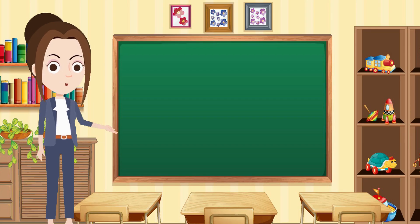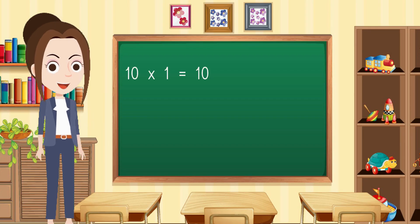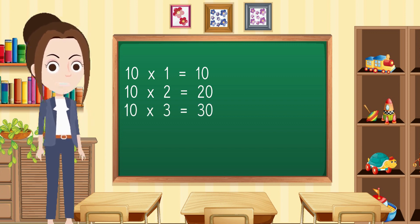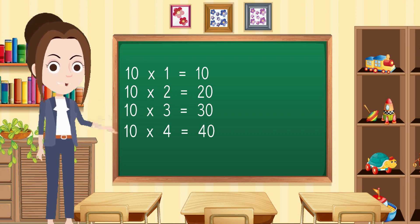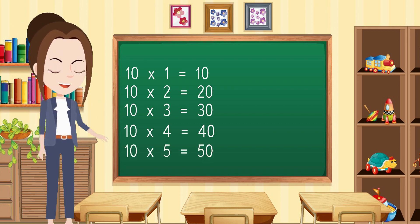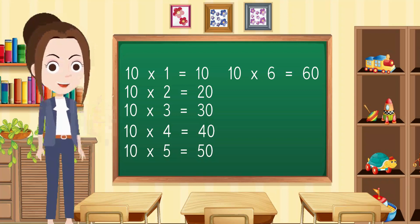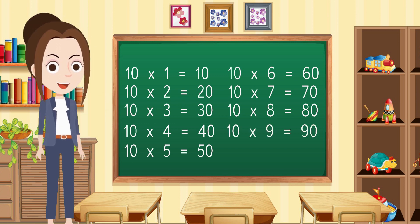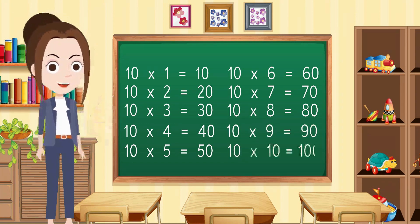Table of 10. 10 1s are 10, 10 2s are 20, 10 3s are 30, 10 4s are 40, 10 5s are 50, 10 6s are 60, 10 7s are 70, 10 8s are 80, 10 9s are 90, 10 10s are 100.